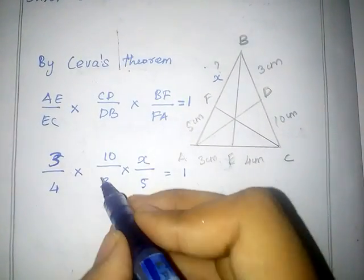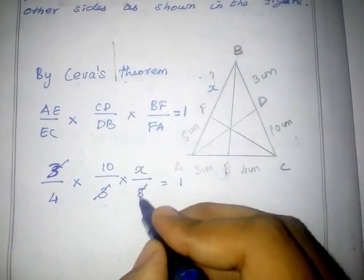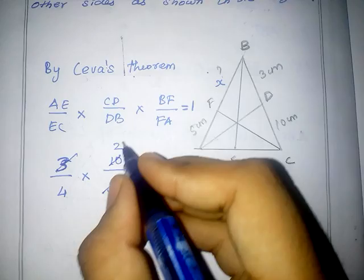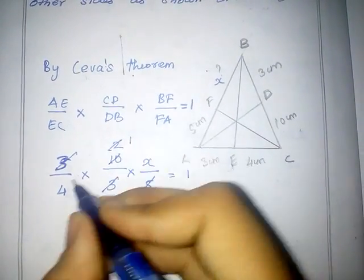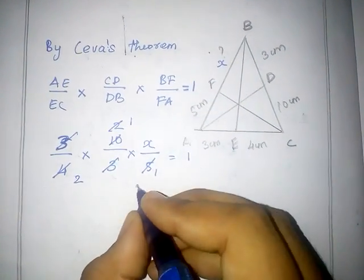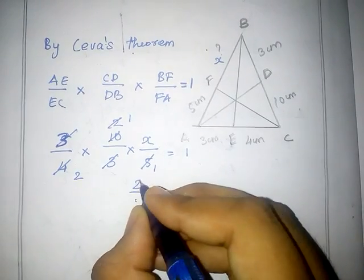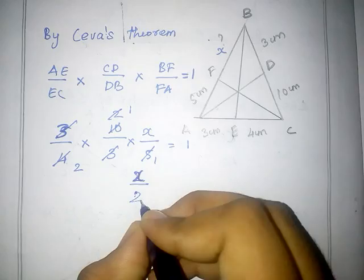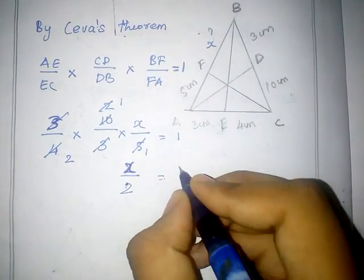3 by 4 into 10 by 3 into x by 5 is equal to 1. x by 2 is equal to 1.